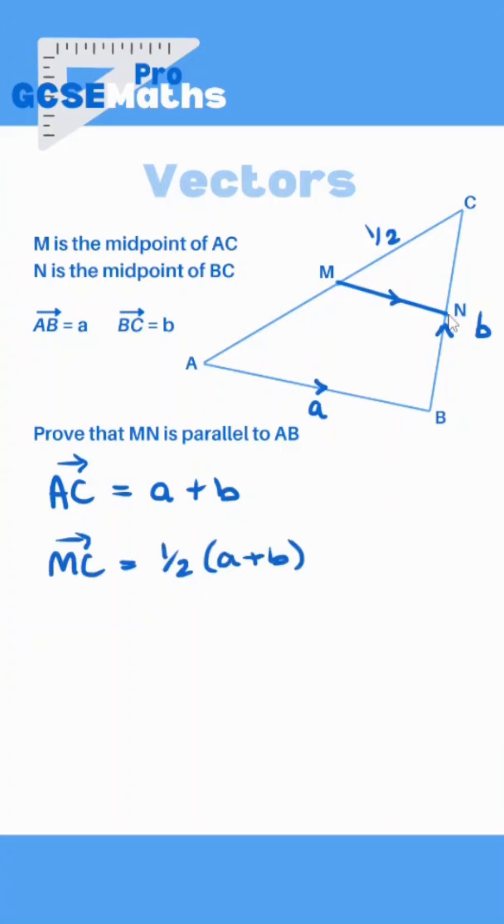Then C to N is first of all the wrong direction so it's going to have to be a negative, and it's also half of BC so half of b. So M to N is these two vectors added together.